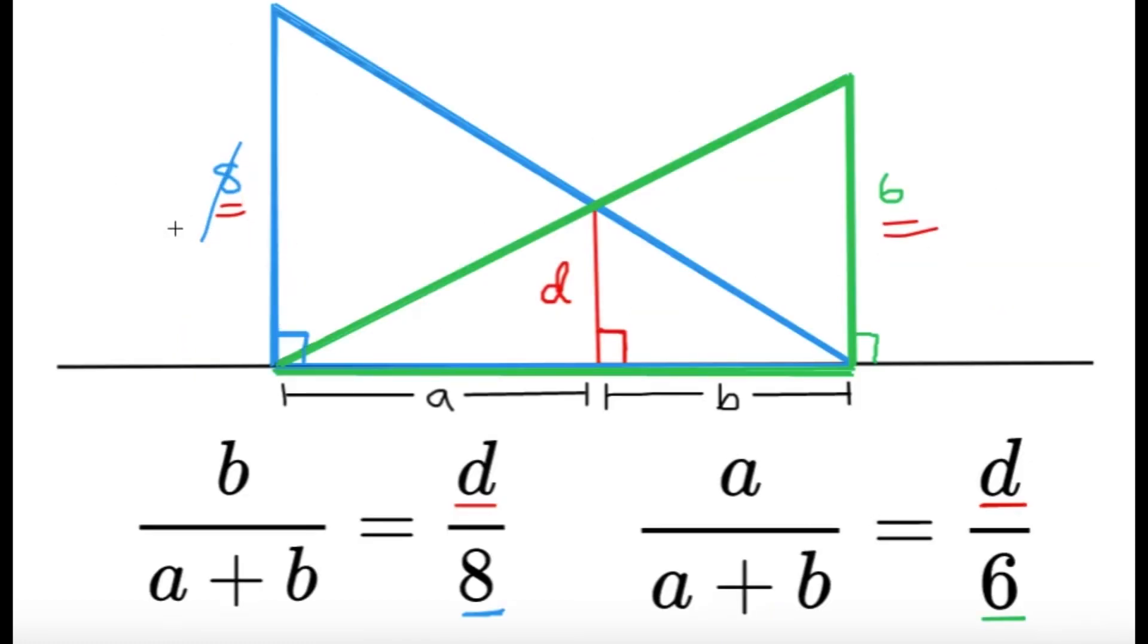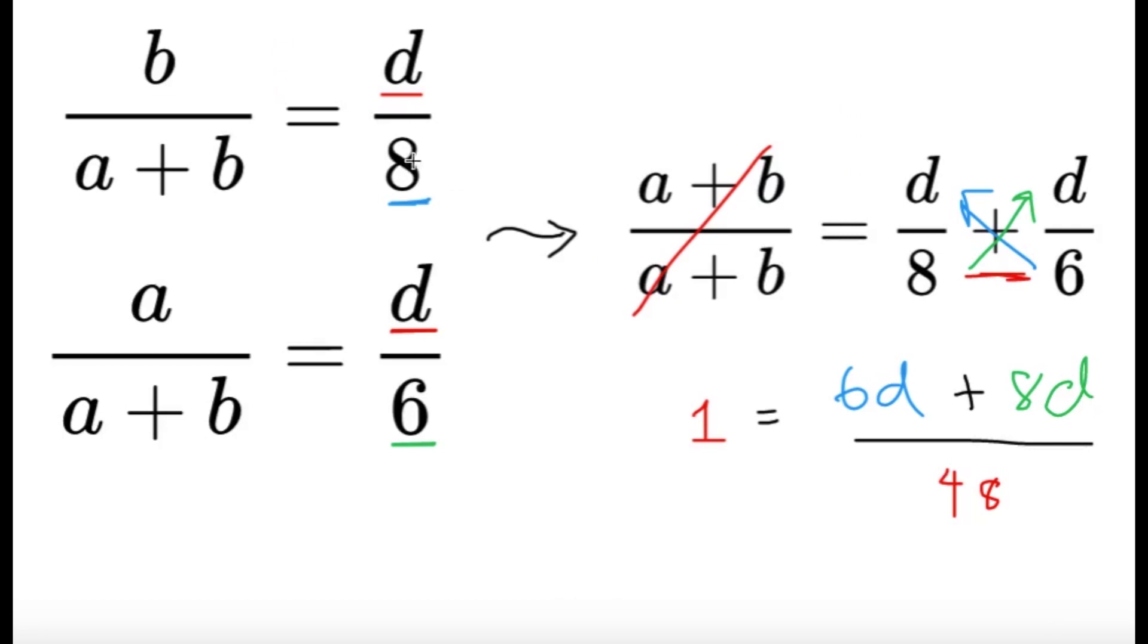Then I'm just doing b over a plus b and just replace all the 8s with x's and all the 6s with y's. So x here, y here. Instead of 6 here and 8 here, this will become xd and yd, and the 48, instead of 48, it's going to be x times y, because we got 48 from 8 times 6.